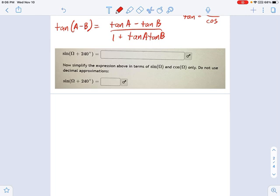So it would be, remember, sines can't change sines. So that's going to be sine of omega times cosine of 240 degrees. And since sines can't change sines, it stays a positive.